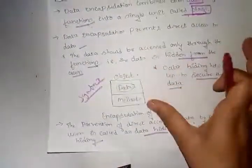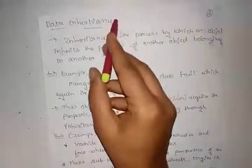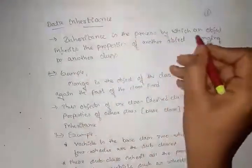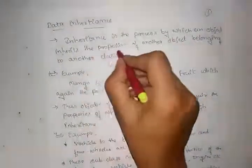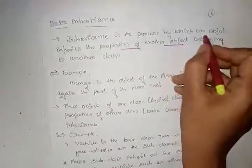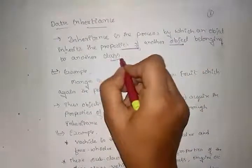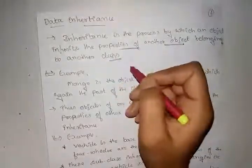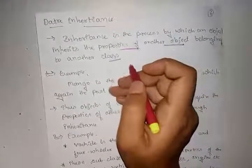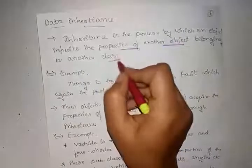The next characteristic is inheritance. Inheritance is the process by which an object inherits the properties of another object belonging to another class. When one class has properties, another object can access those using inheritance.